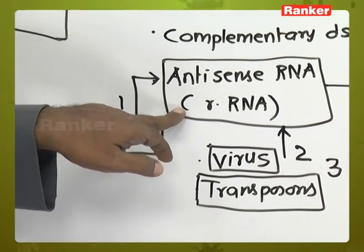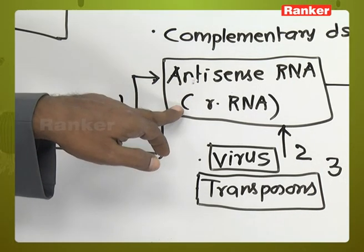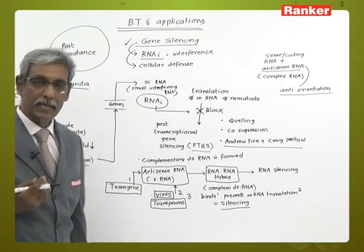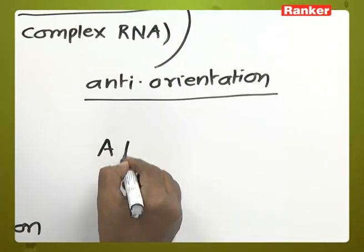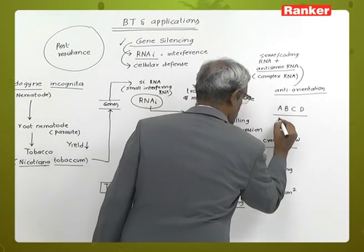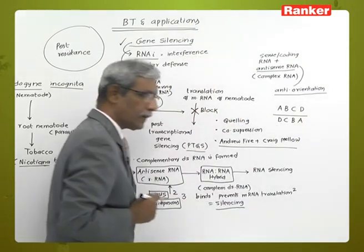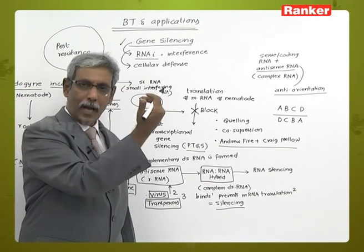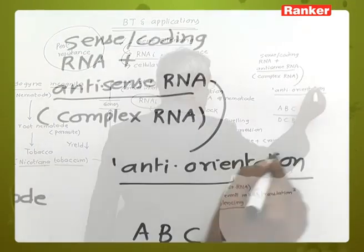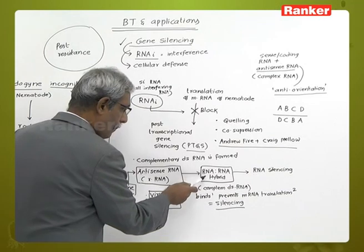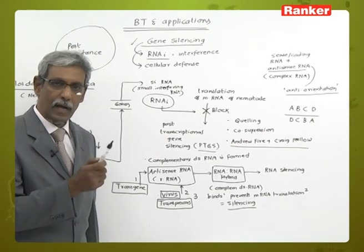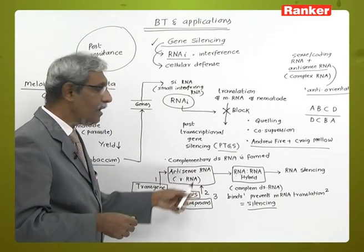Once introduced into the tobacco cells, they can produce an antisense RNA — one which has an anti-orientation. Suppose the nematode has a gene sequence of ABCD; the antisense RNA produces a sequence of DCBA. So it aborts the nematode's program by reading the sequence in the opposite direction. When this antisense RNA is synthesized, it binds to the nematode's mRNA, forming an RNA-RNA hybrid.